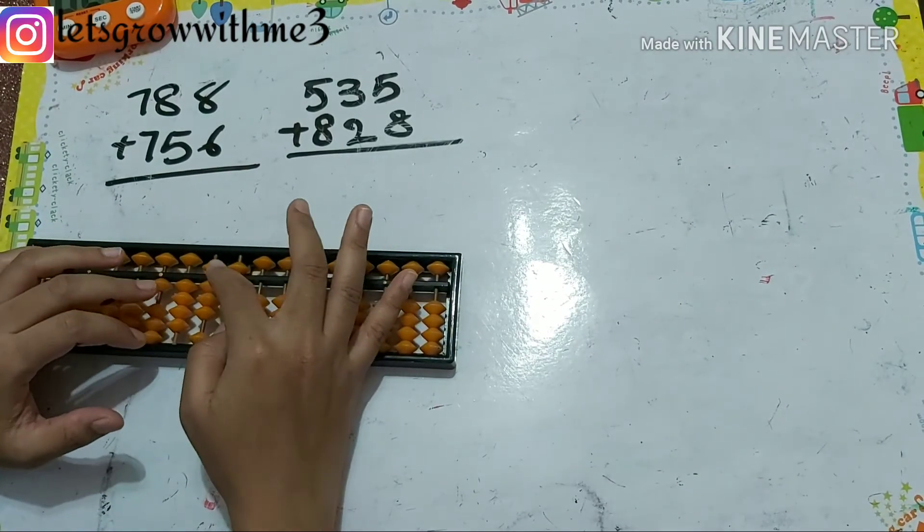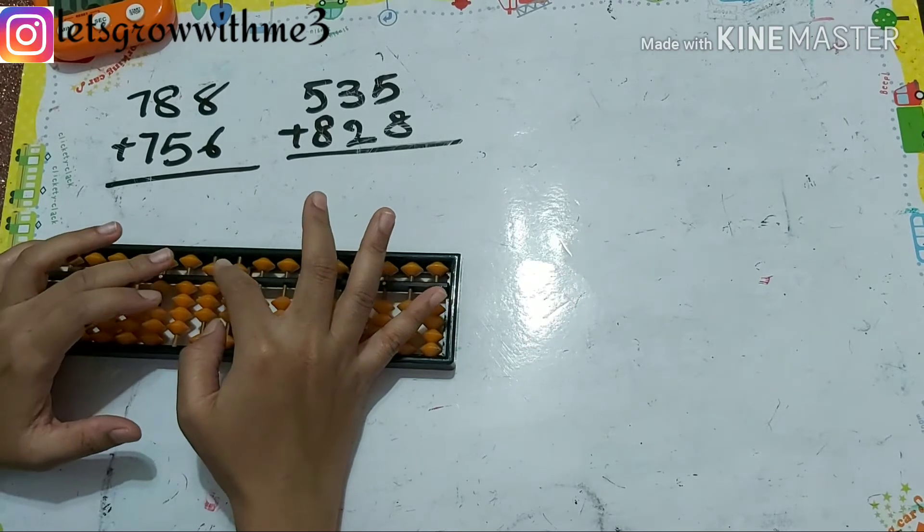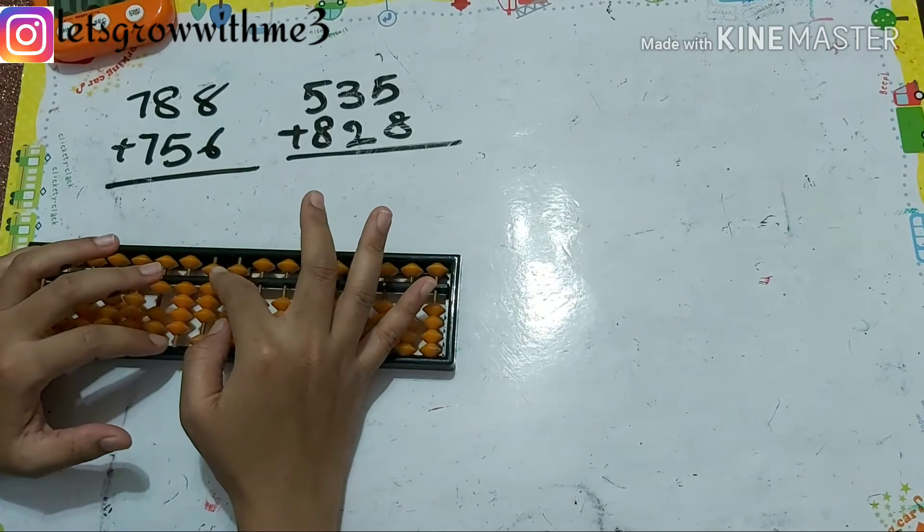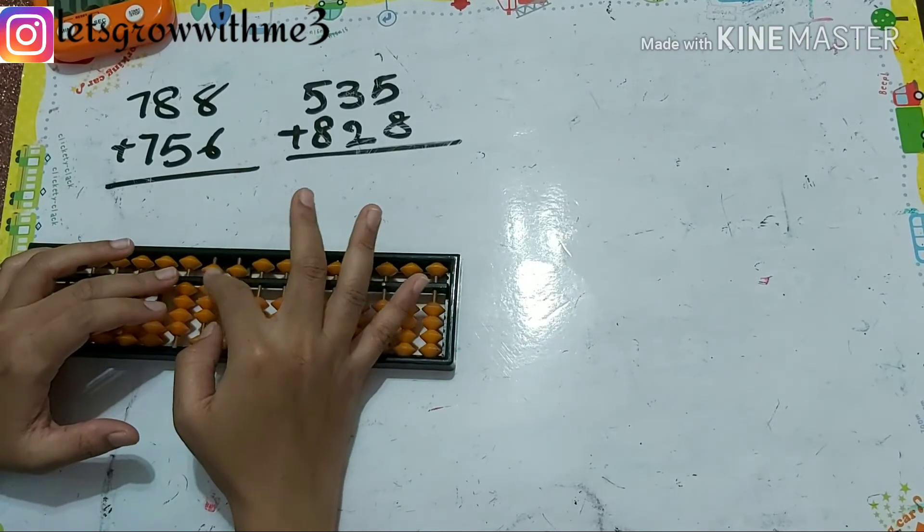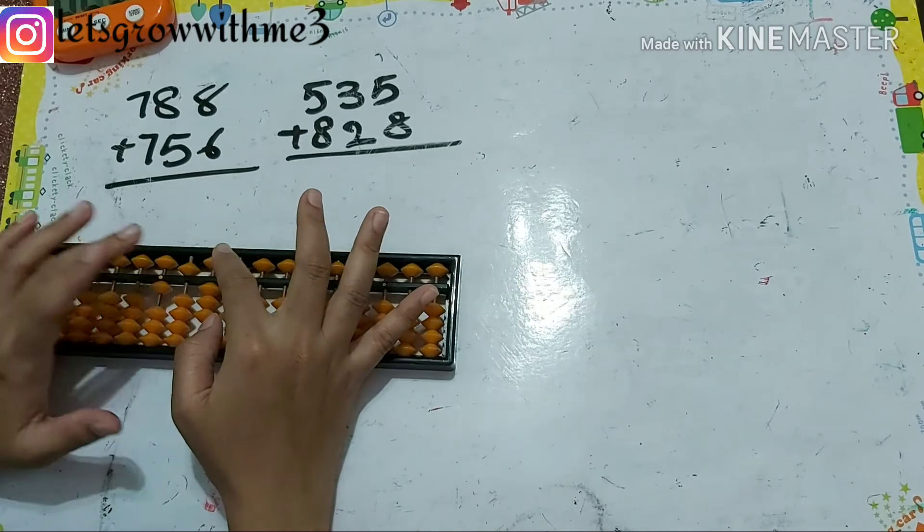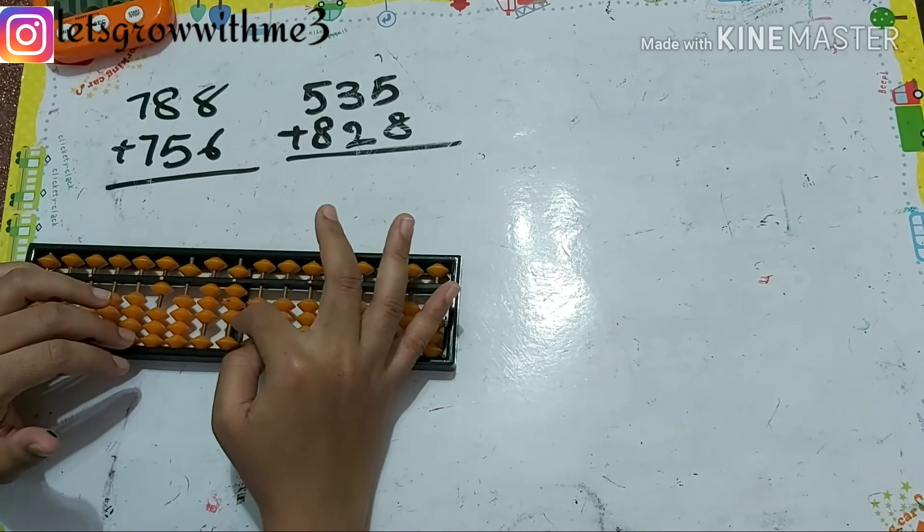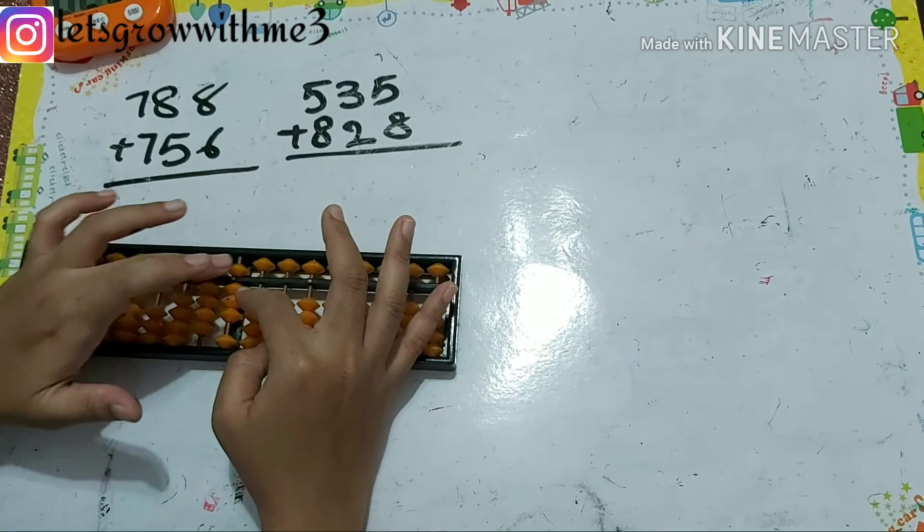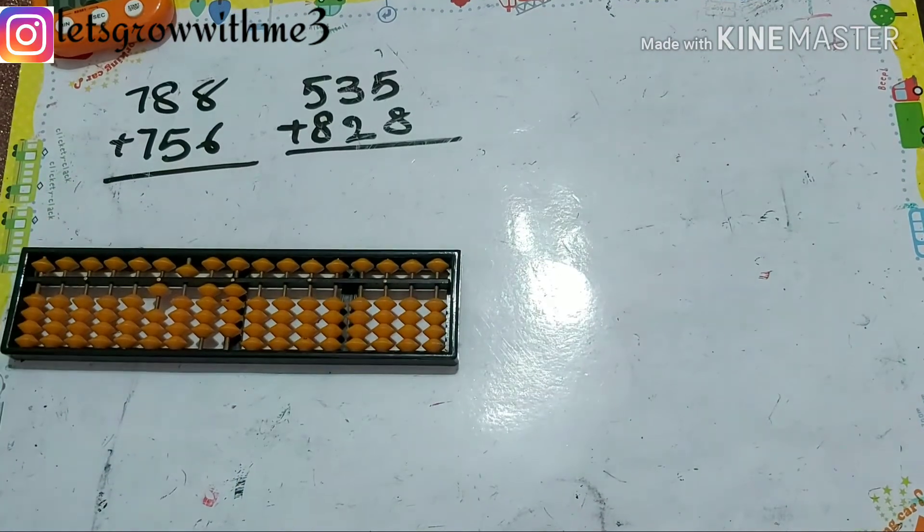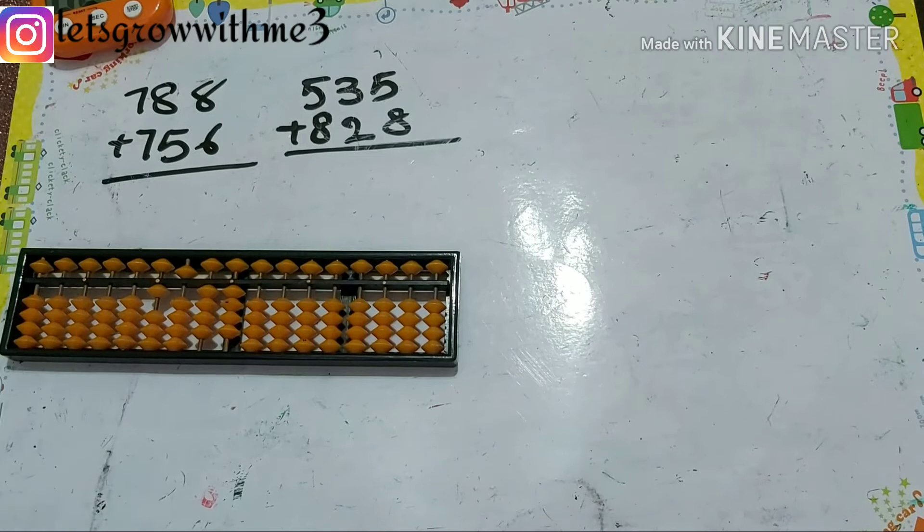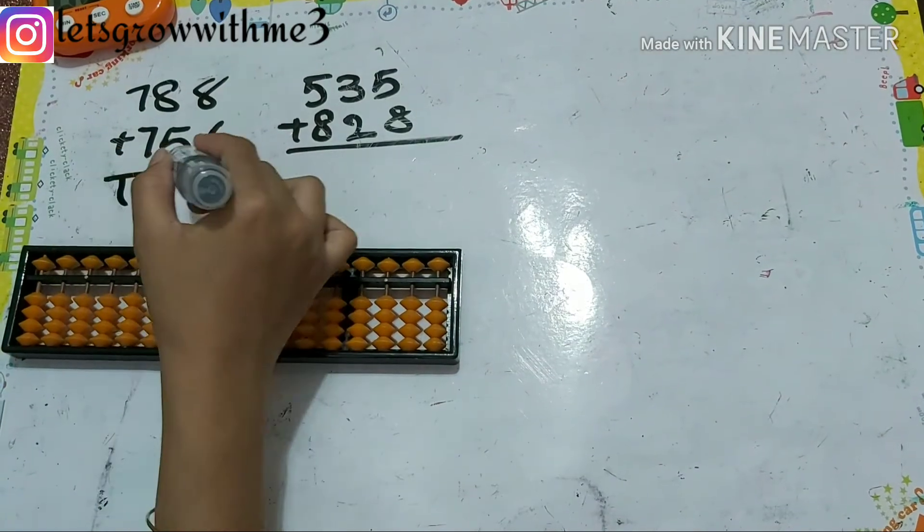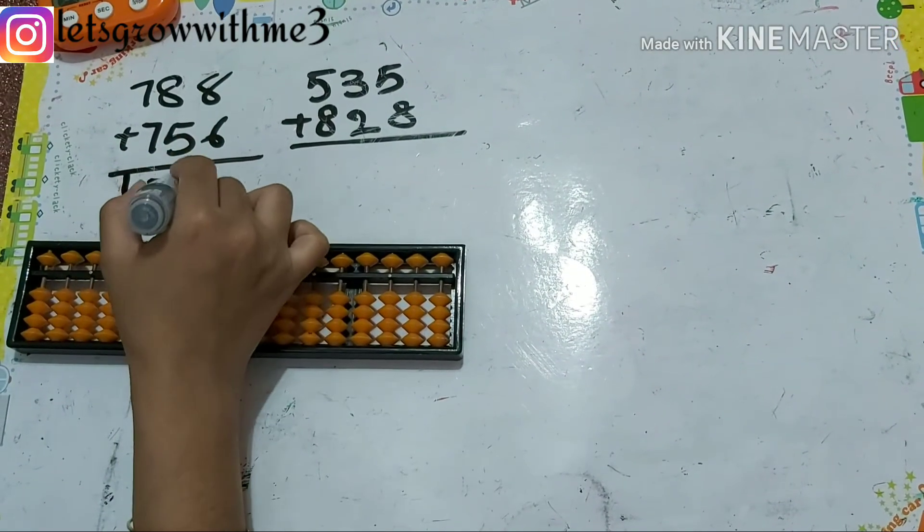Plus 10 minus 5. So we'll do plus 10 later, so minus 5, plus 5, plus 50 minus 40. Next plus 6, papa up, mama up, babies up. So answer is 1544.